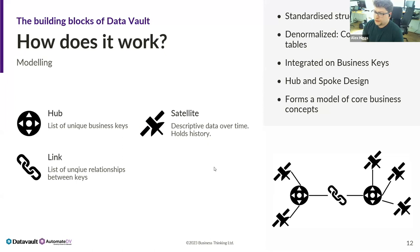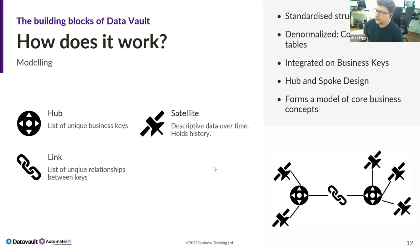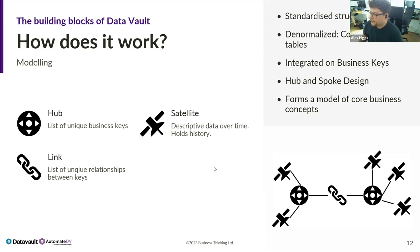All your business concepts go into hubs, because they're your unique business keys. All relationships between those concepts go into your links. All the historic and descriptive data - tangible stuff like names and so on - go into your satellites. You can make almost anything out of these three objects. Your hubs should always be concepts that the business knows about - if someone non-technical sees a hub called 'hub customer,' they immediately know what it means.